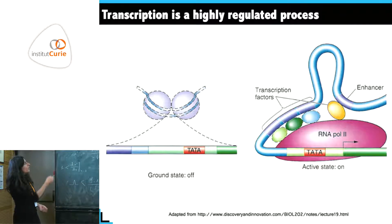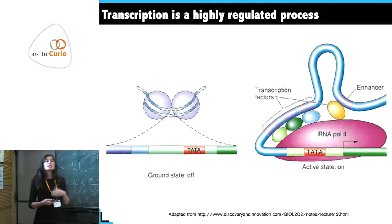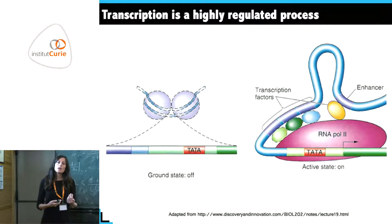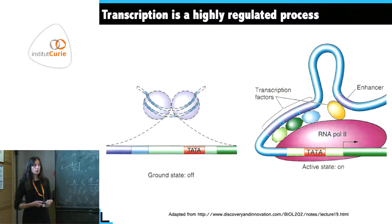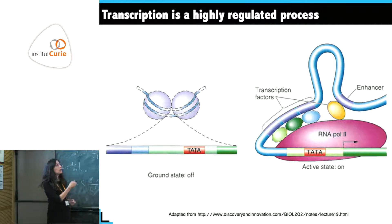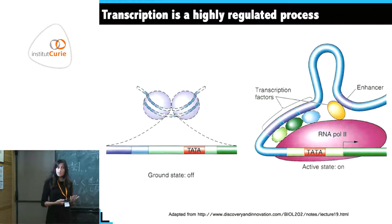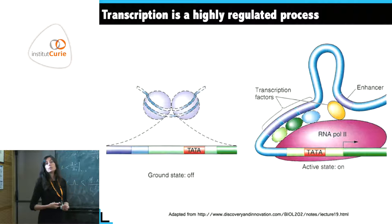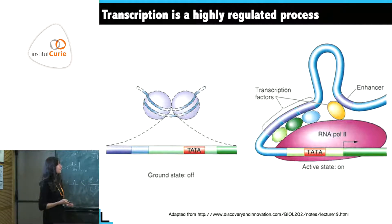A series of events have to occur to go to the 'on' state where transcription is occurring, and you have many more proteins that get in touch with each other and form complexes in order to bring the RNA polymerase that starts the process of transcription.